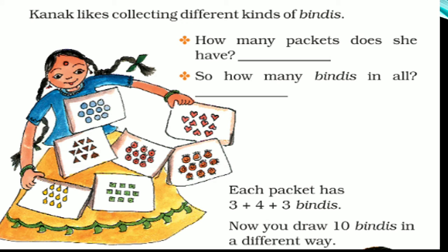Kanak likes collecting different kinds of bindis. How many packets does she have? Let's see. 1, 2, 3, 4, 5, 6, 7. She has 7 packets of bindis. And on 1 packet, how many bindis are there? Let's count. 1, 2, 3, 4, 5, 6, 7, 8, 9, 10. 10 bindis on 1 packet.